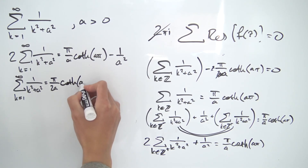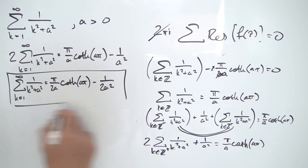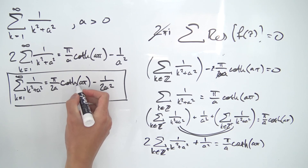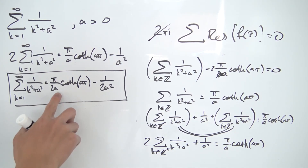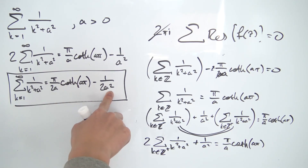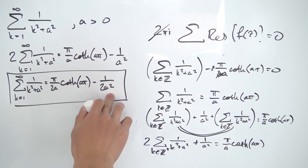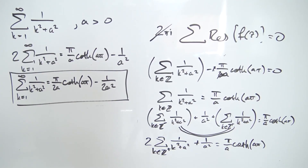The final result is: the sum from k = 1 to infinity of 1 over k² + a² equals π/(2a) times coth(πa) minus 1/(2a²). This is a nice result featuring a hyperbolic function. An interesting observation is that as a → 0, even though each term individually diverges, both terms diverge at the same rate and the difference yields π²/6 — recovering the Basel problem result. That's it for this video; I hope you enjoyed it.